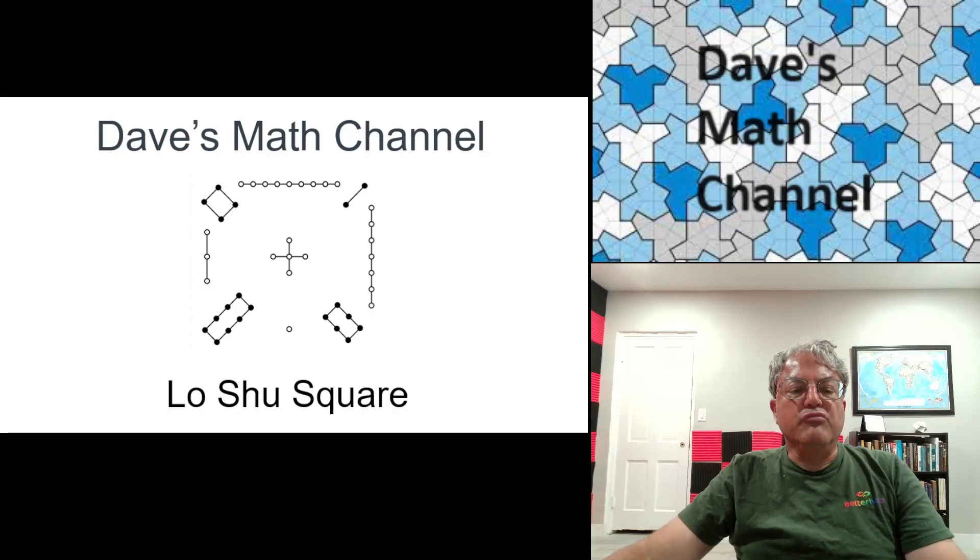Hi everyone, welcome back to Dave's Math Channel. I'm your host David Tehr, and today I'm going to talk about the Lo Shu Square, which is just another name for the 3x3 Magic Square or the Order 3 Magic Square.